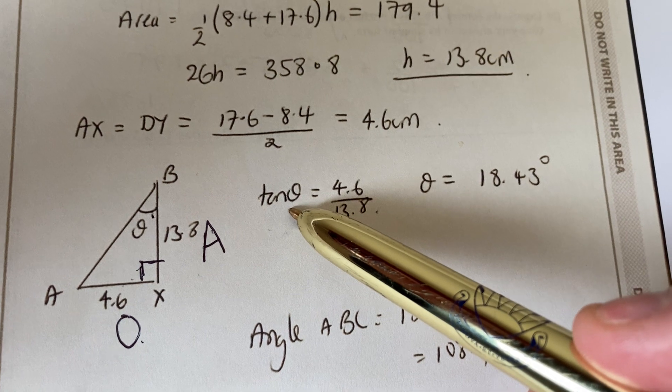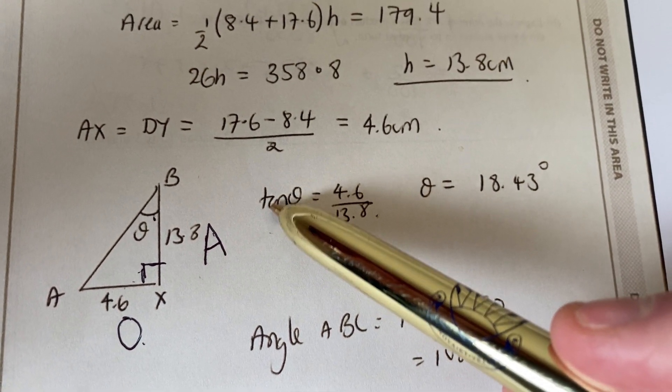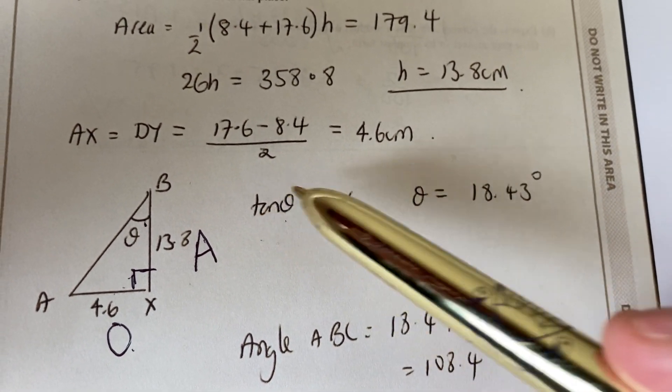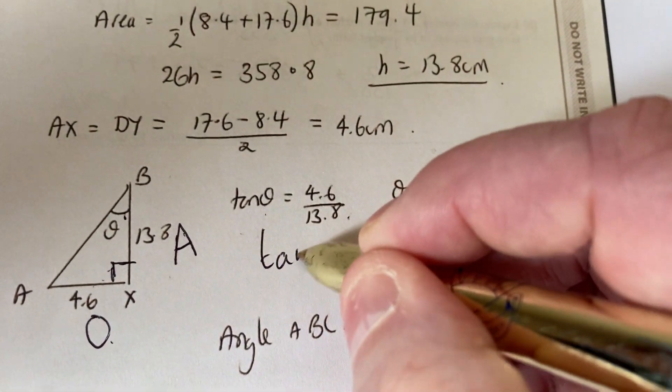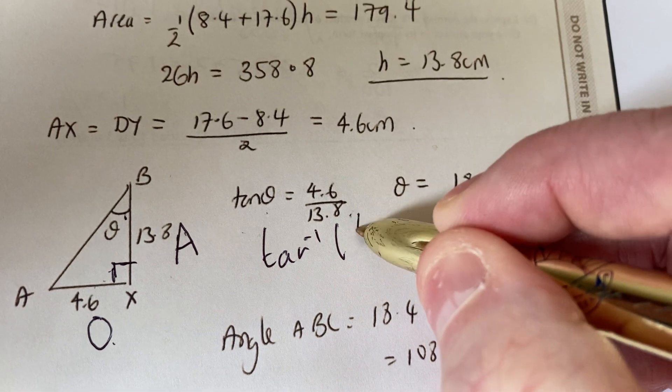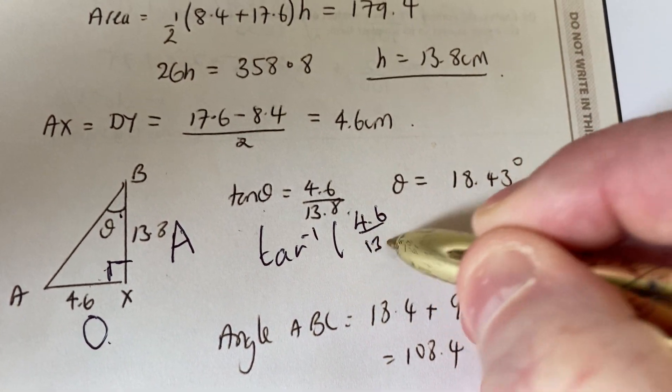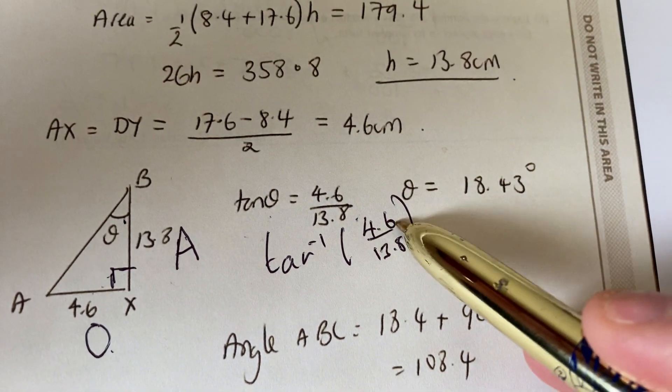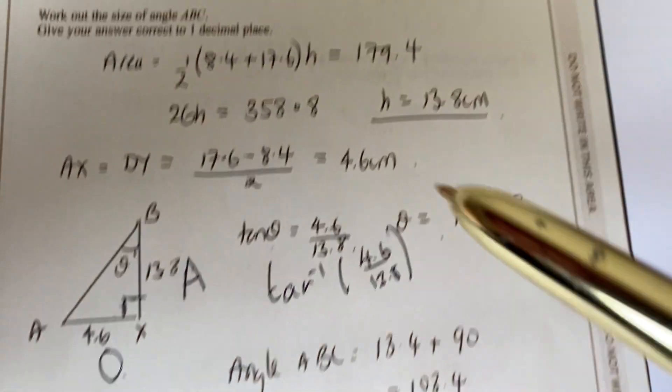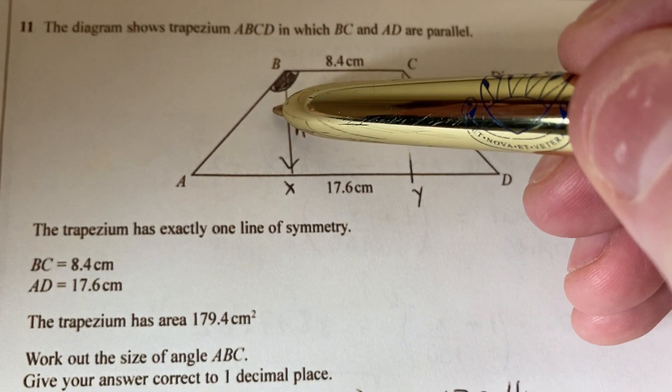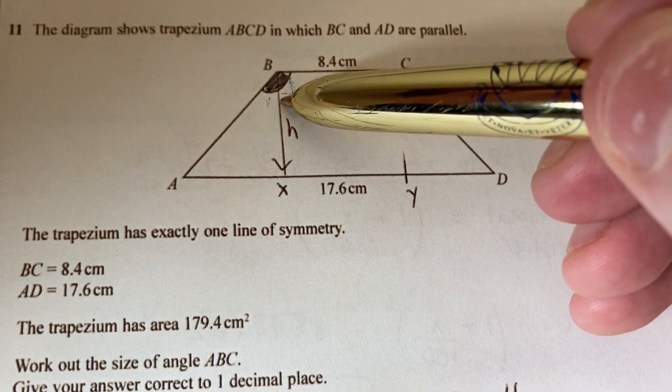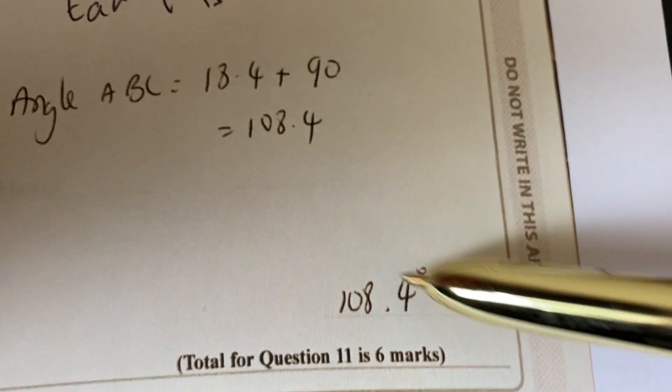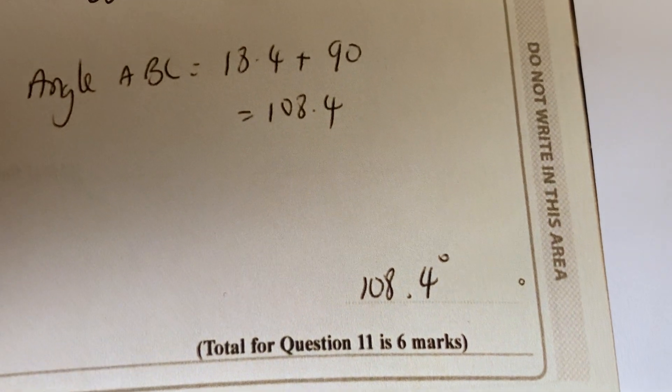Always done to an angle. To get rid of the tan you don't divide it, you do the opposite of tan which is tan inverse, so in your calculator you need to do tan inverse brackets 4.6 over 13.8 and that gives you an angle in there of 18.43. That's that angle up there, 18.43. Don't forget you've got the 90 degree angle to go with it, so if you add those two together, it's at 108.4 degrees.